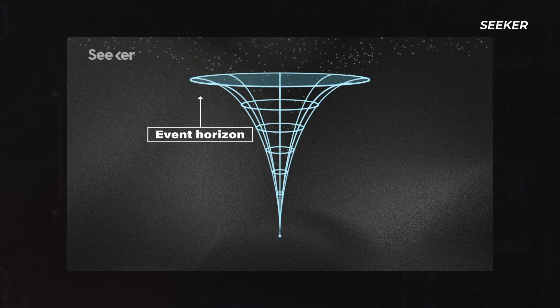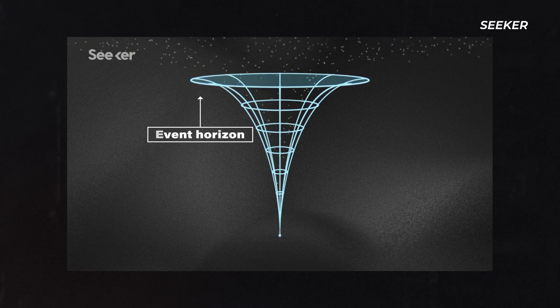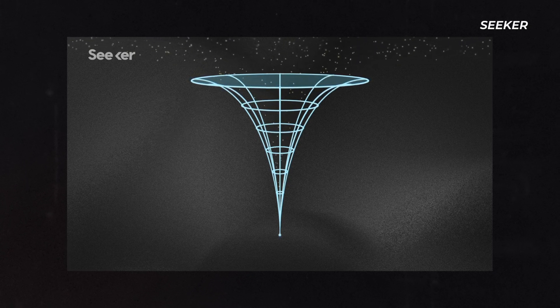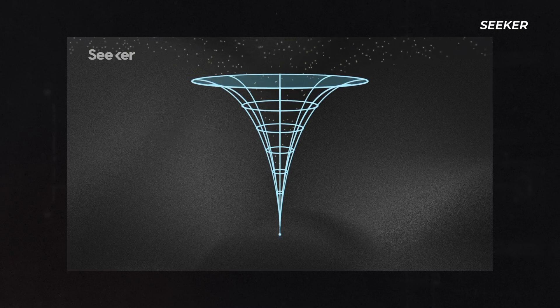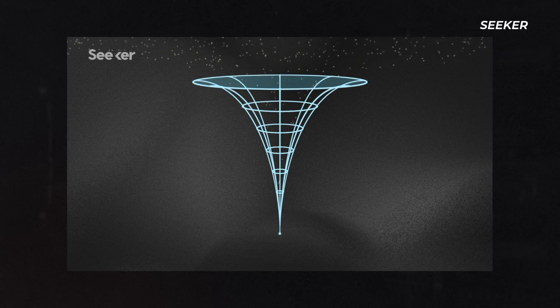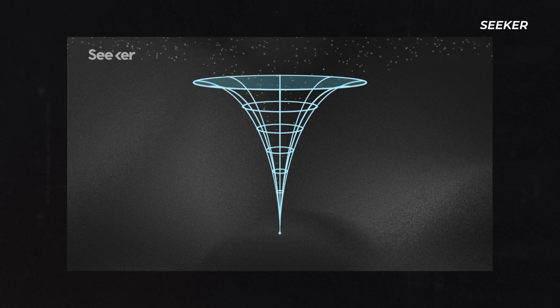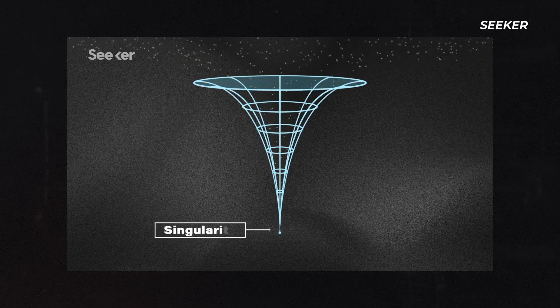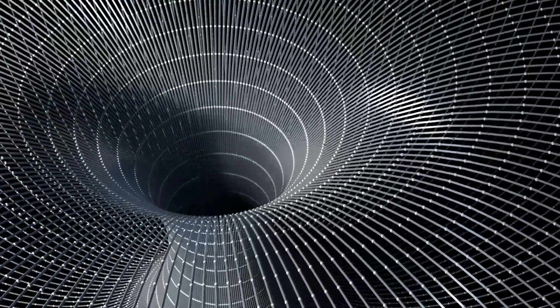If you cross the event horizon of a black hole, you'll never be able to escape. But with a white hole, you can't cross the event horizon — in fact, you would never actually be able to reach it. You could travel straight at a white hole's event horizon for an infinite amount of time and never actually cross it.